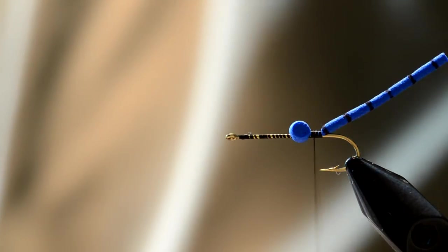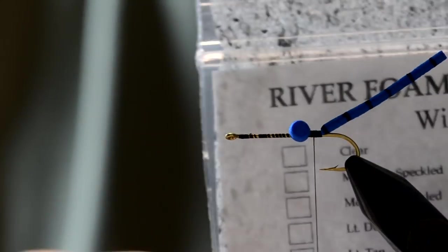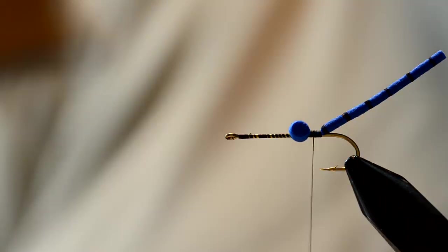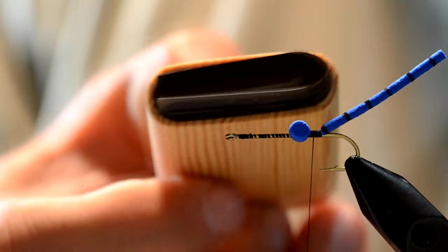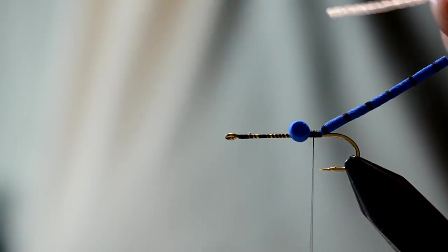Now once that is tied in and secured, I'm going to take my foam wing. What this is, is river foam from River Road Creations, and I cut it with their stonefly wing cutter. So that's just the shape of the wing and it actually does a pretty good job imitating the shape of the actual natural.